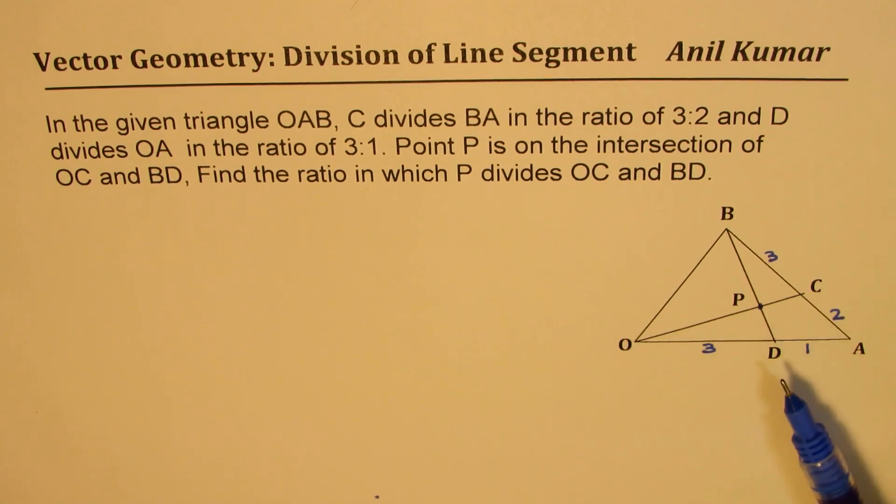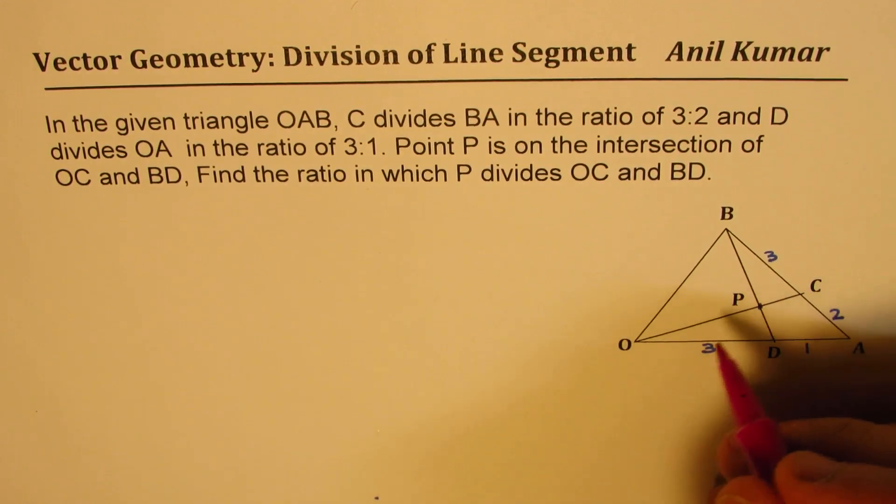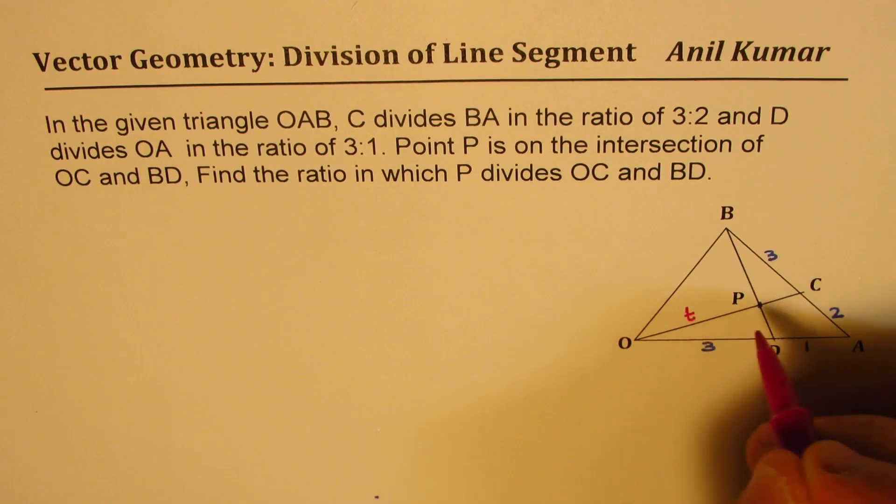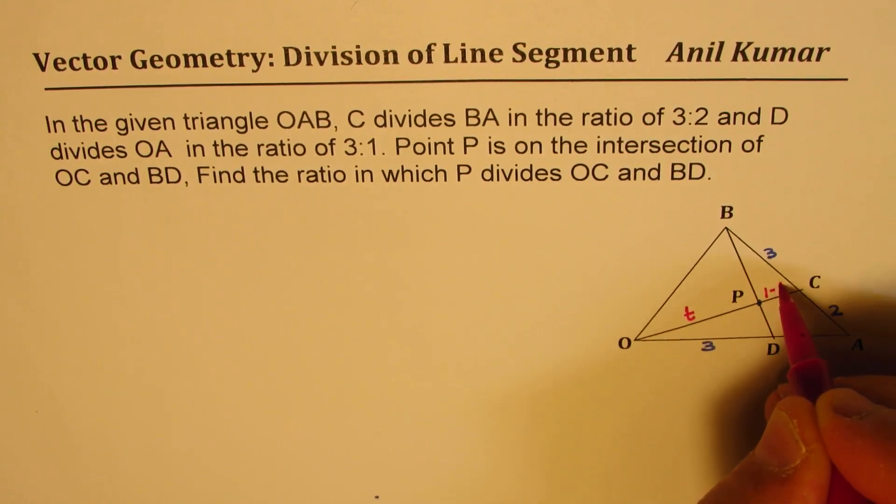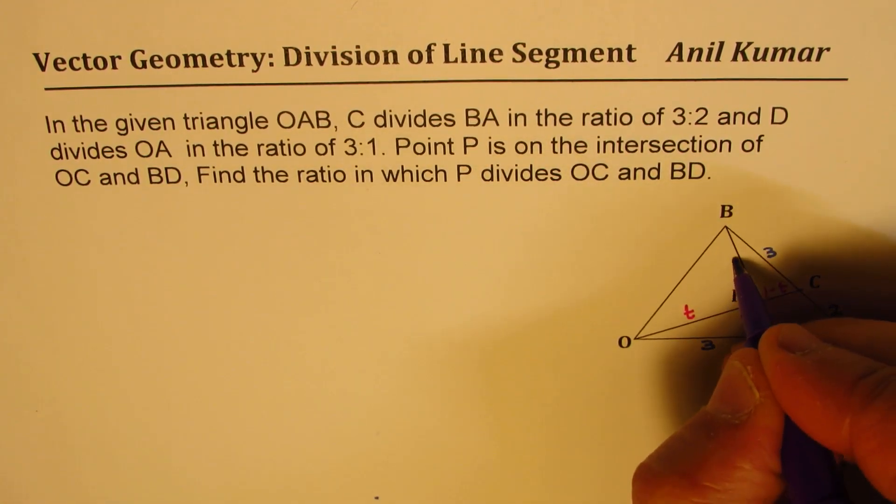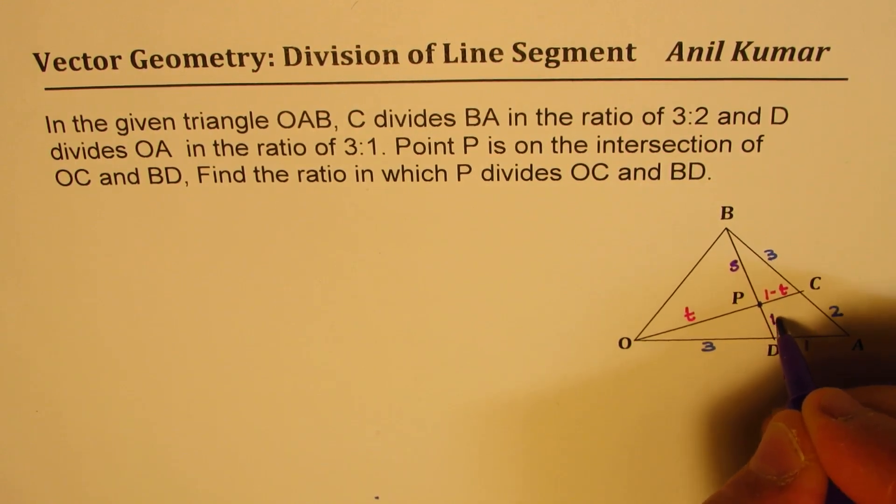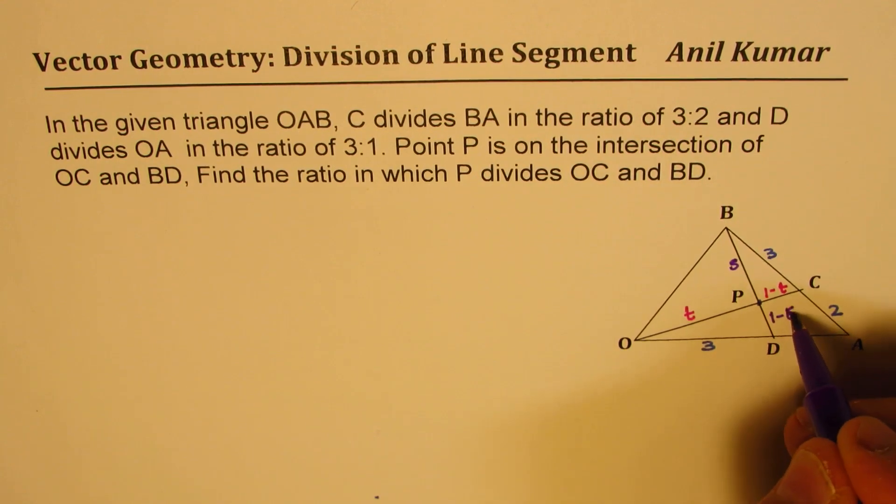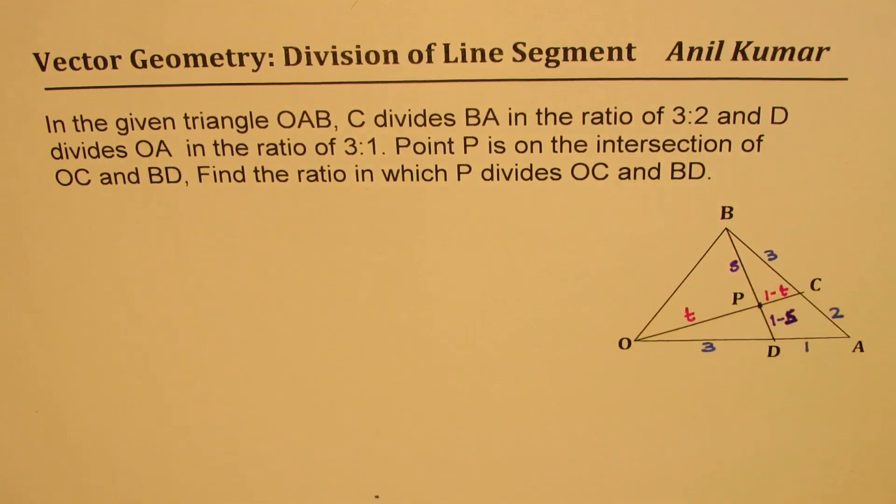So we are given two points which are dividing the two sides of a triangle. Now we need to find the ratio in which P divides the given line segments. So let's say the ratio is T, so this will be like 1 minus T. And the other one, we can take this as S. Then in that case, this will be 1 minus S. So if this is one unit length, that is S part of it. And we will need to find the value of T and S basically.